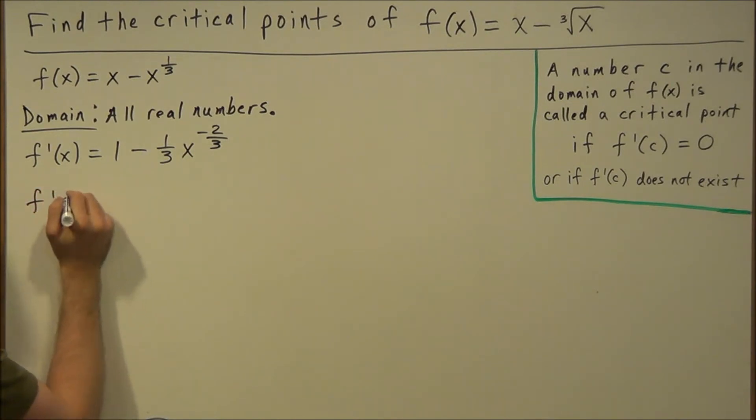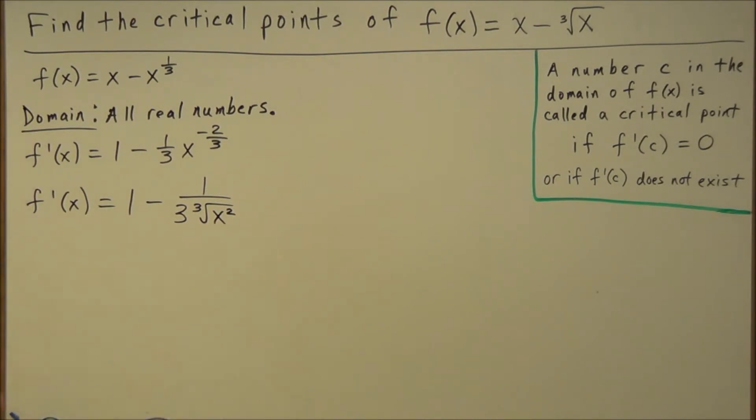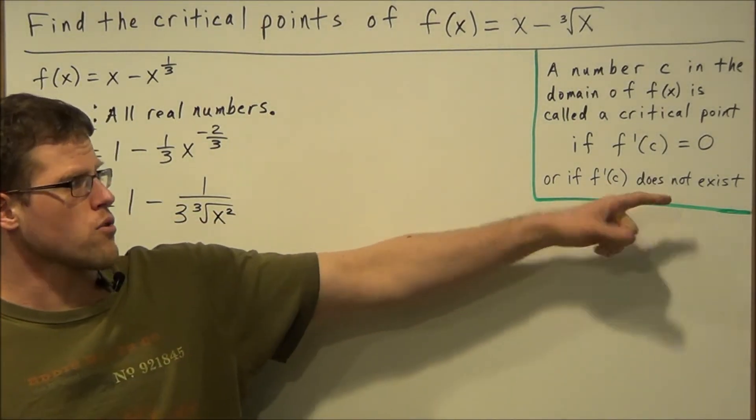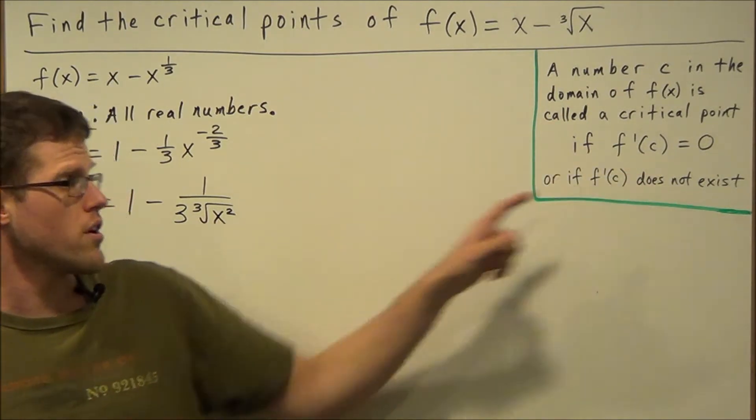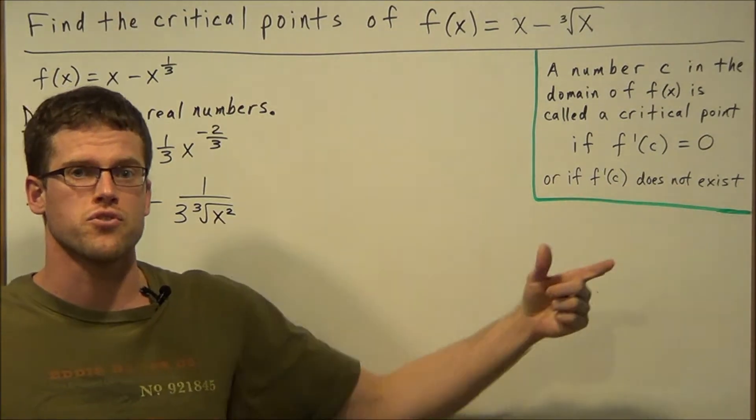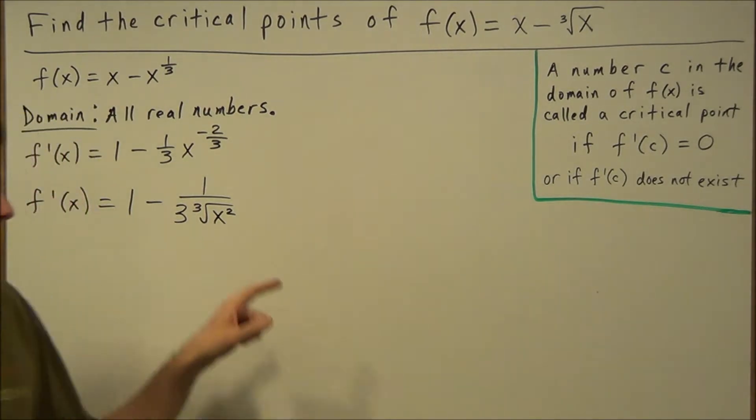We could rewrite this as 1 minus 1 over 3 times the cube root of x to the second power. This is the most oftenly forgotten part of finding critical values - that students won't always look for where the first derivative doesn't exist. Notice a zero denominator would give us something undefined.